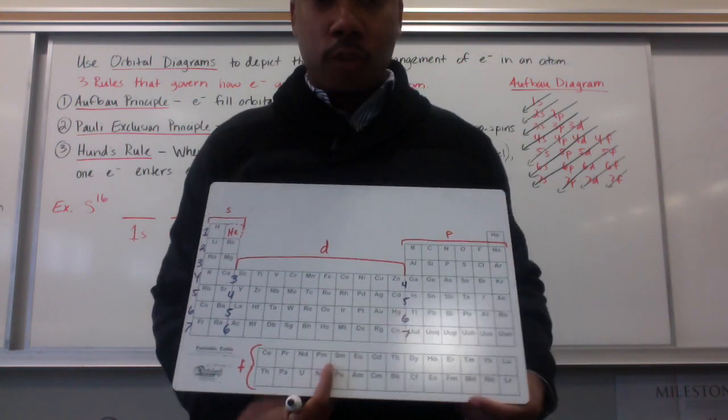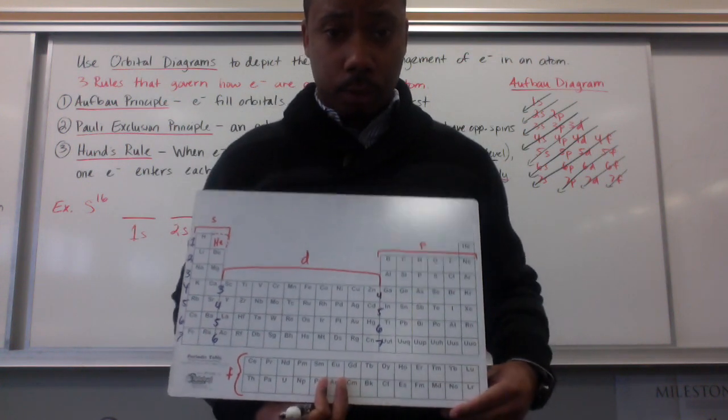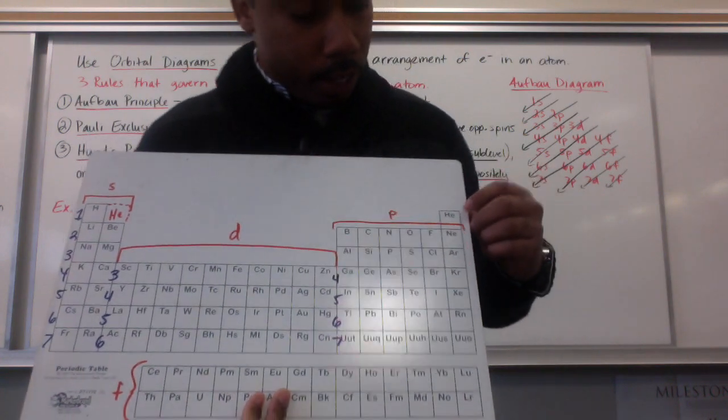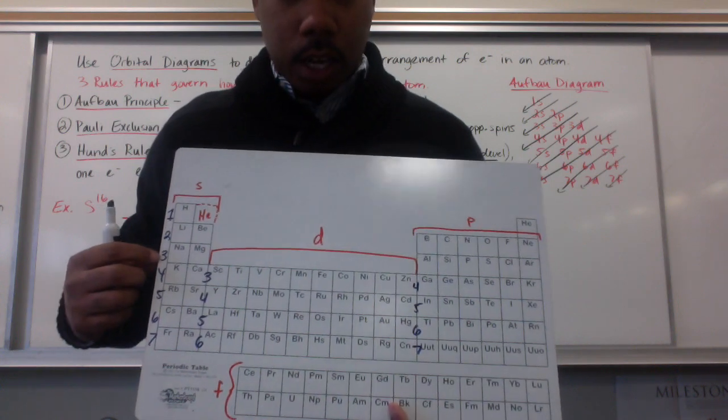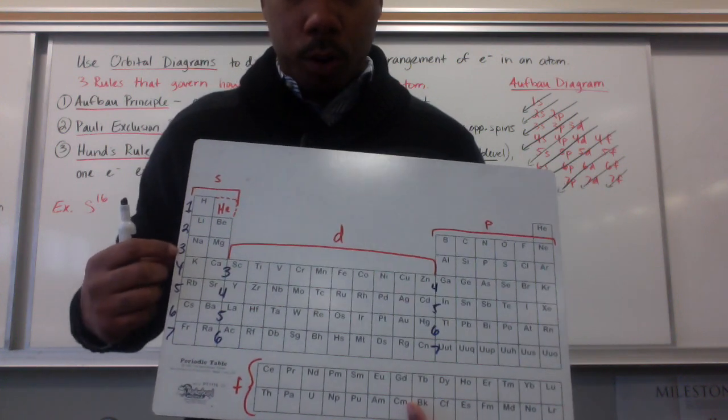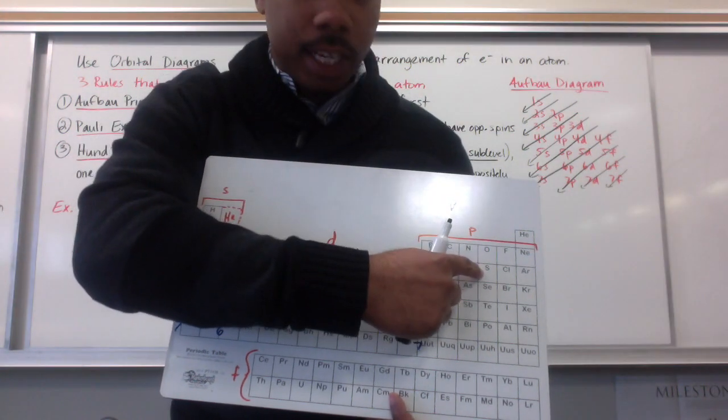16 electrons. And it's located in the p-sub-level. Our periods represent our principal energy levels. So, I am in period 3, and across period 3, I go all the way to sulfur, and I'm there.